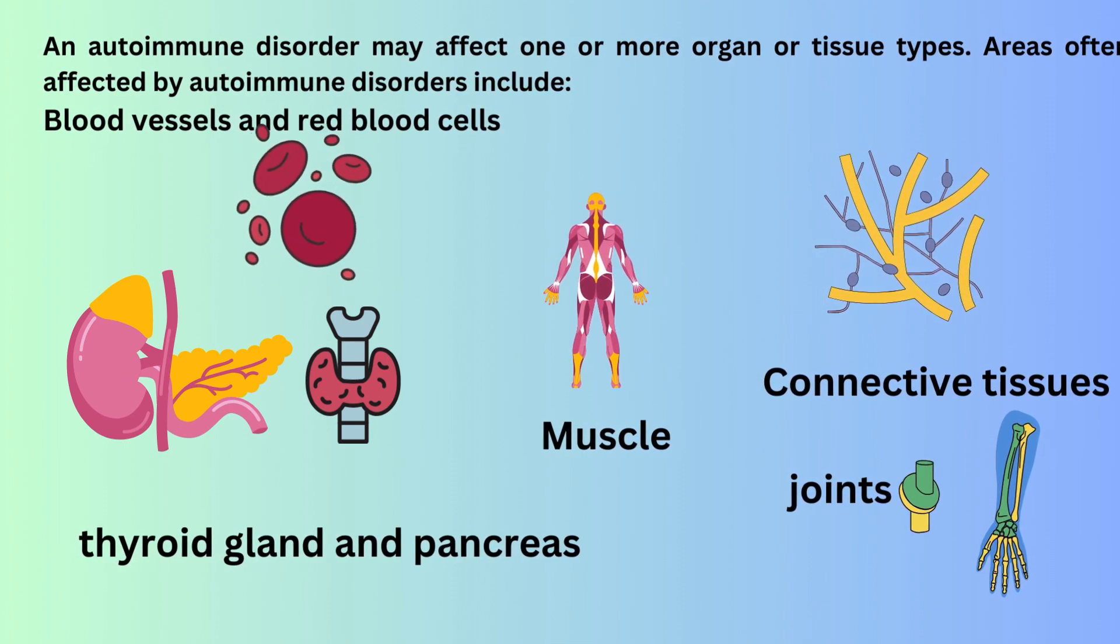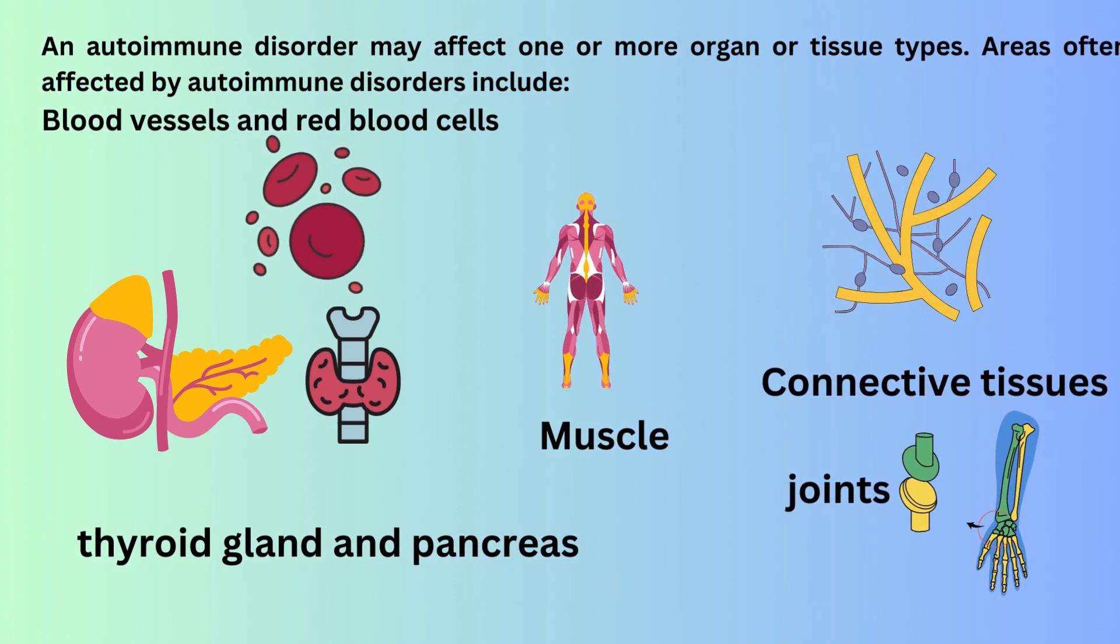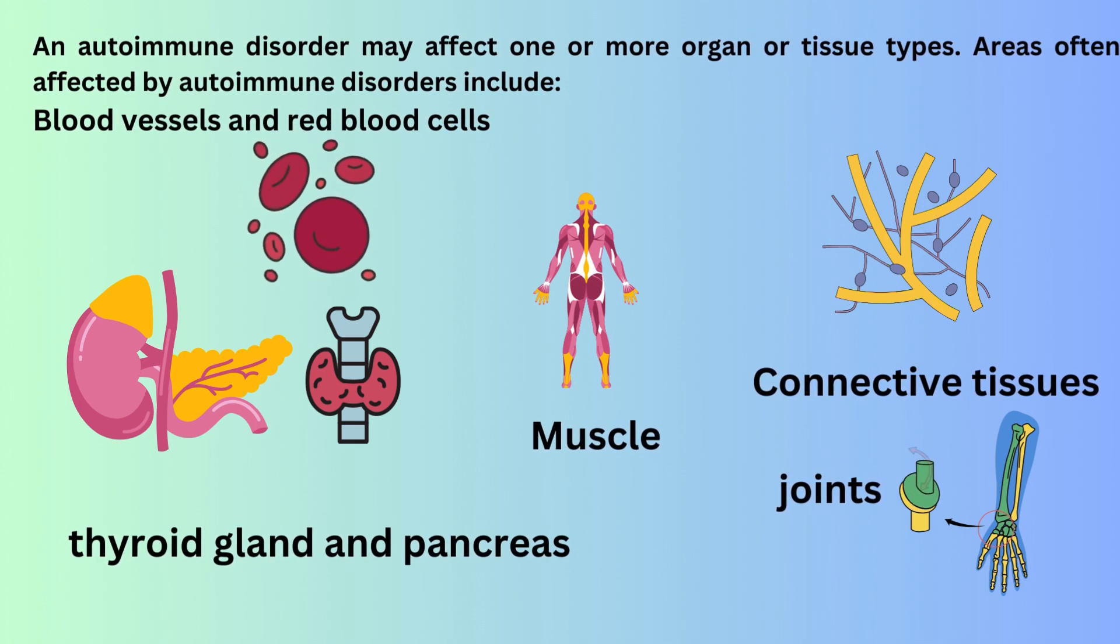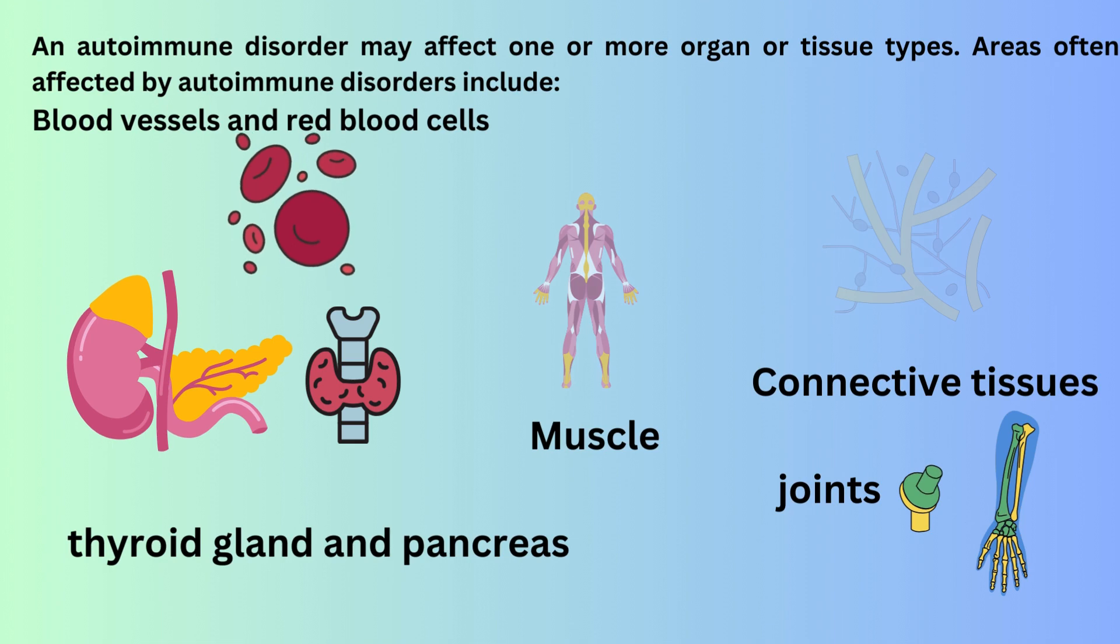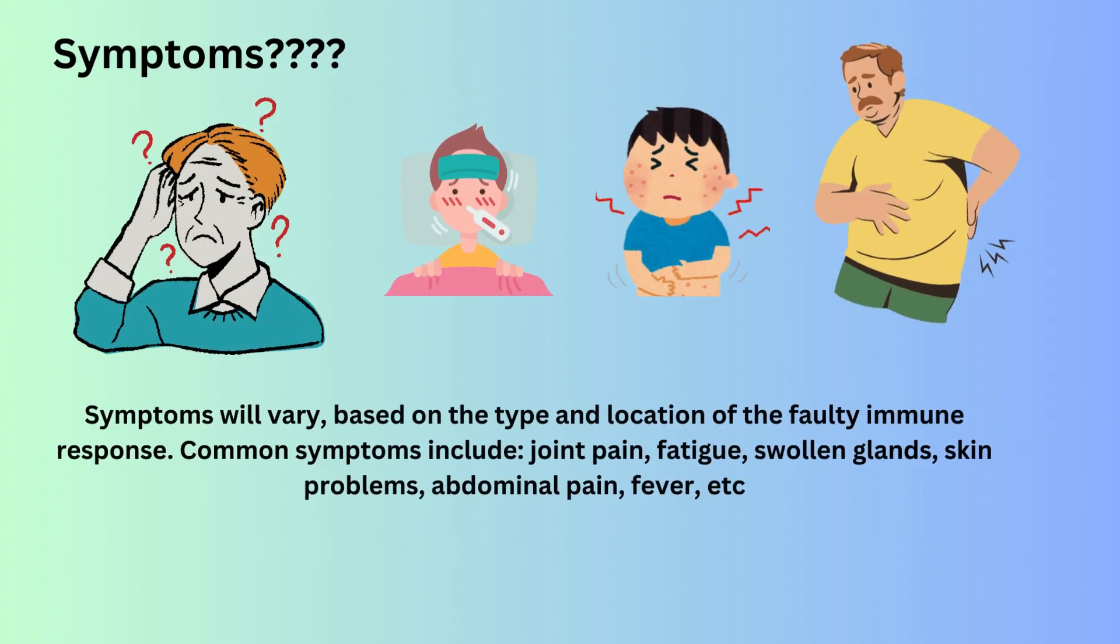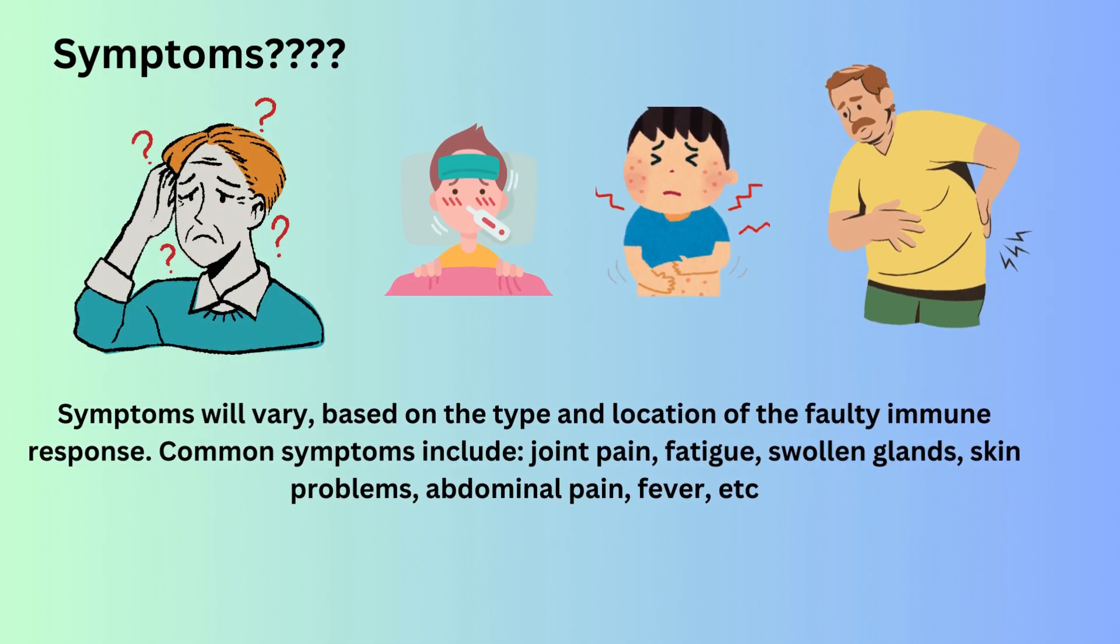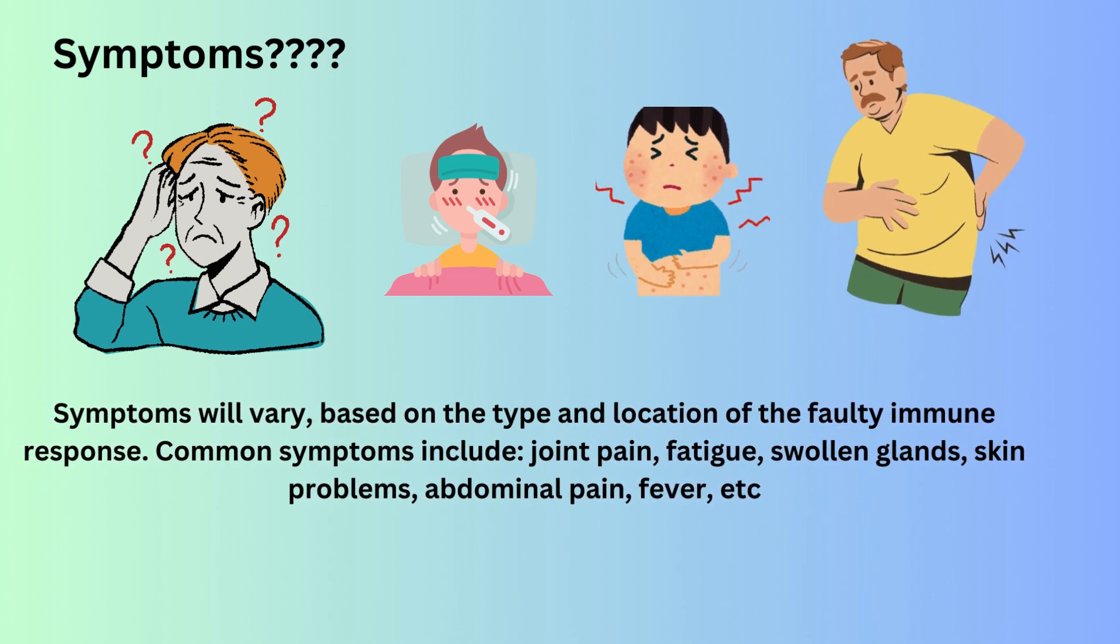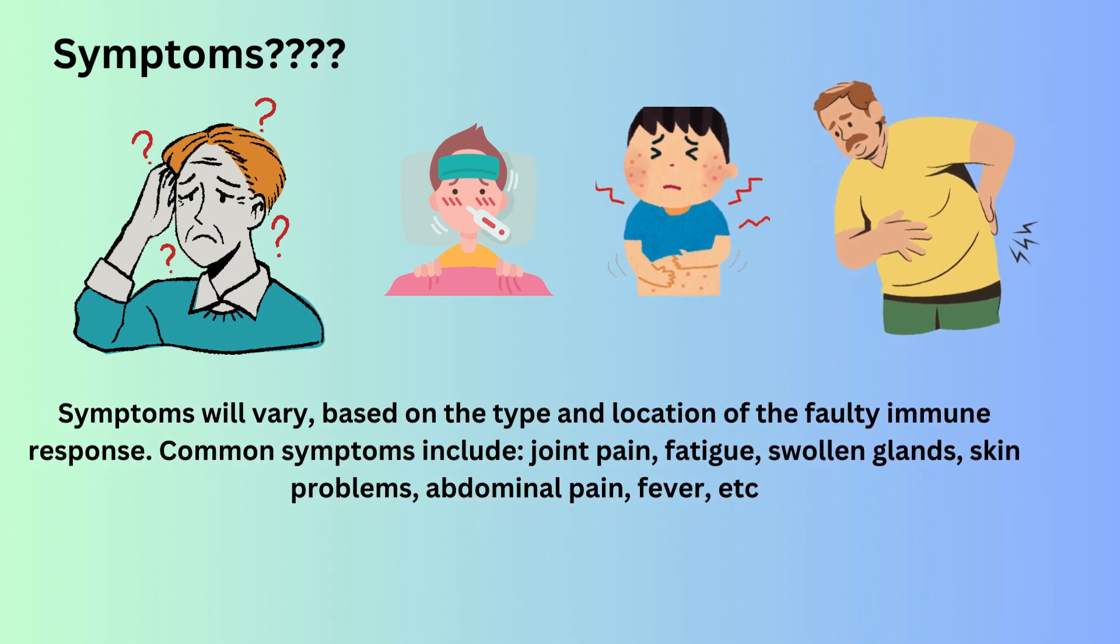Areas often affected by autoimmune disorders include red blood cells and blood vessels, pancreas and thyroid gland, muscles, connective tissue, and joints. What can be the symptoms of these disorders? Symptoms will vary based on the type and location of the faulty immune response. Common symptoms include joint pain, fatigue, swollen glands, skin problems, abdominal pain, fever, etc.